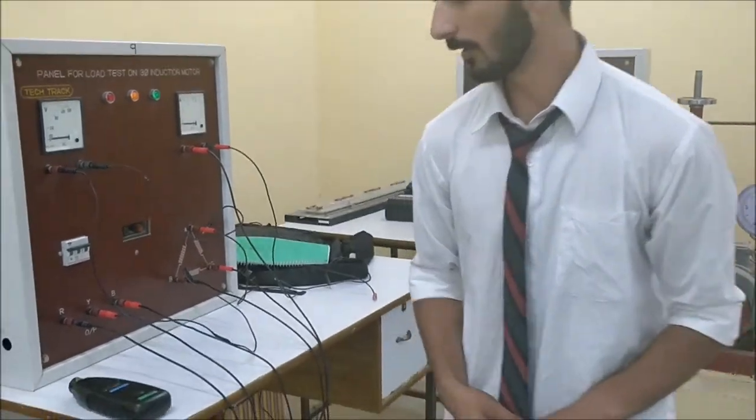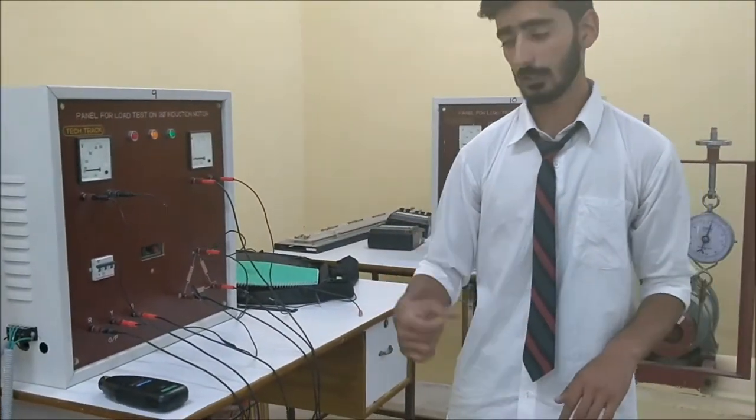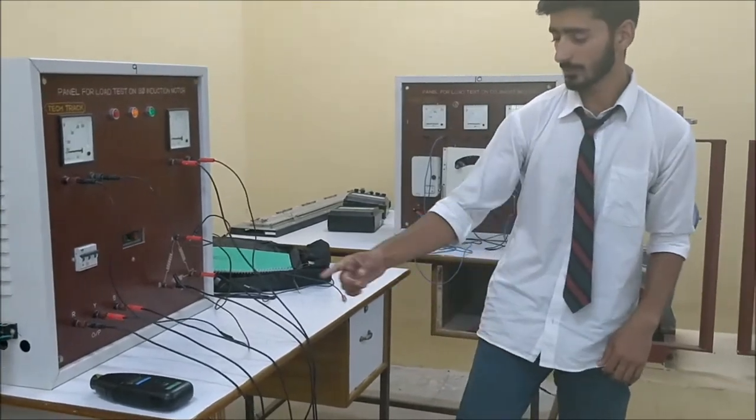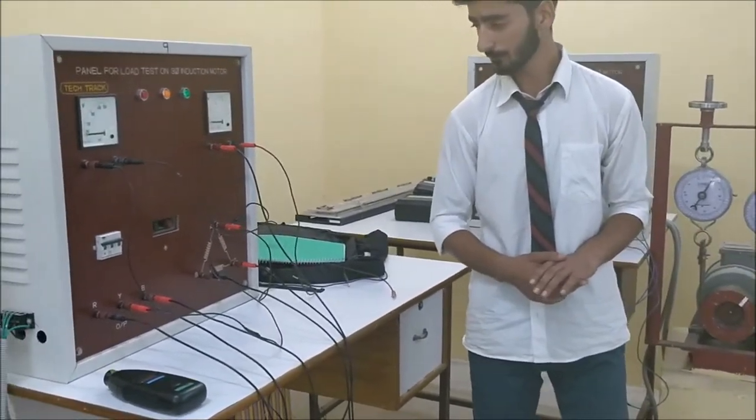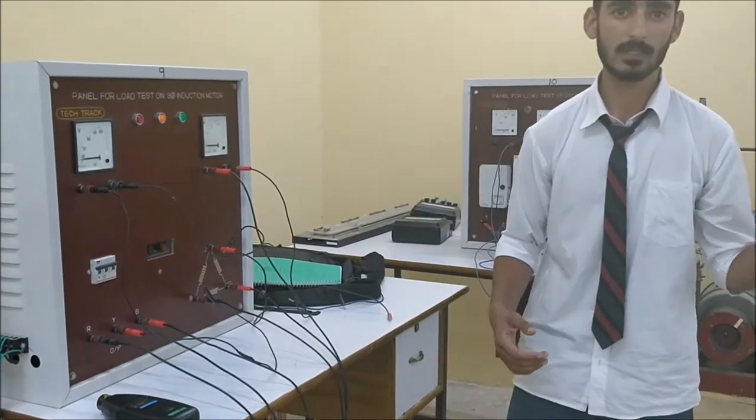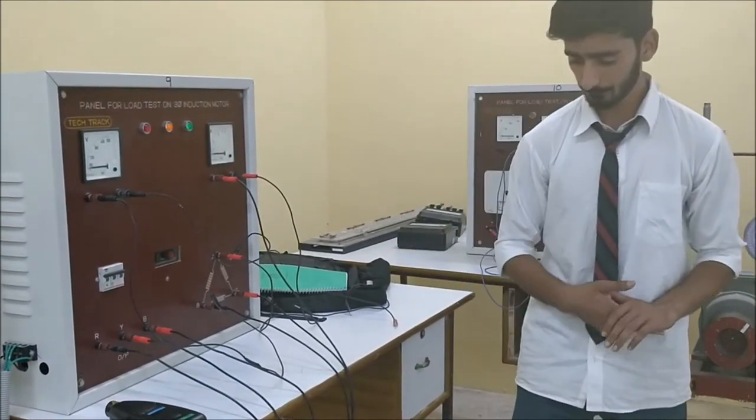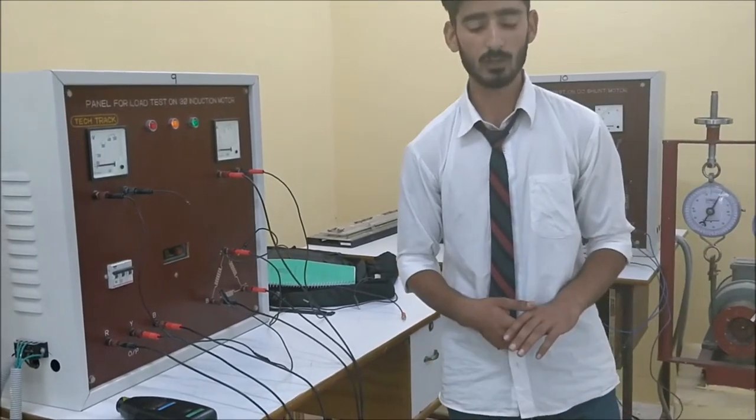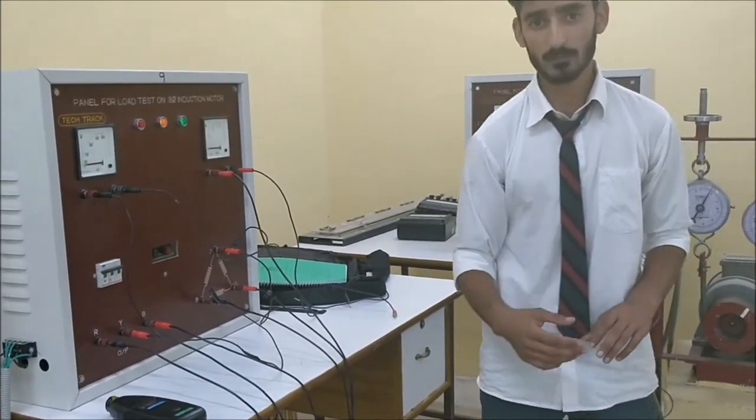The motor used here is 8 pole, 1440 RPM, and 3 horsepower. Let's come into the starting of the 3-phase induction motor. We have many methods of starting this motor, like direct-on-line starting, auto-transformer starting, and star-delta starting. The method we have used here is auto-transformer starting.